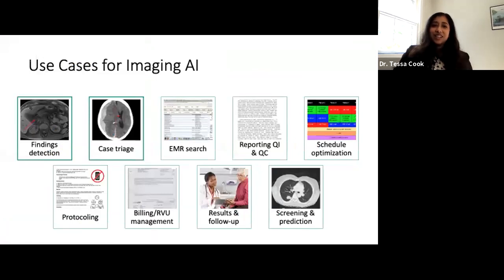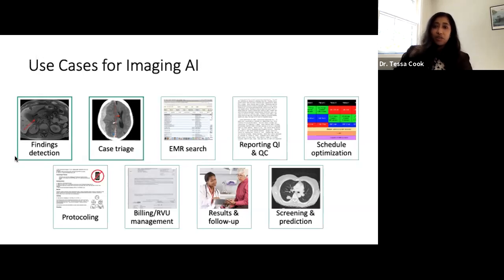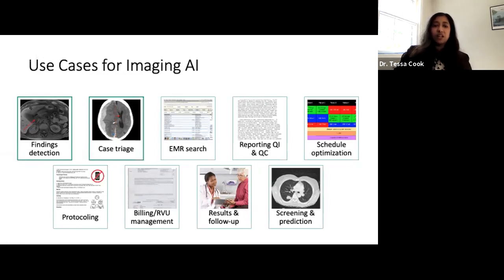The more we learn about AI, the more we realize the potential it has to help us improve the care we deliver to our patients. If you haven't started thinking about how AI fits into the radiology workflow, you are not too late. There are so many potential use cases for imaging AI. In clinical practice we generate all kinds of data — pixel-based data, report-based data, EMR data, or even billing data — and there are use cases for AI to affect all of those. The two we hear most about are AI for findings detection, a pixel-based task of looking for an abnormality on an imaging exam, and case triage, which modifies the radiologist's worklist to bring studies with acute or life-threatening abnormalities higher on the list so the radiologist sees them more quickly.